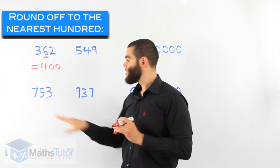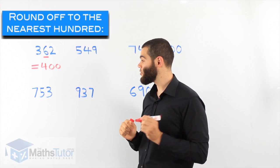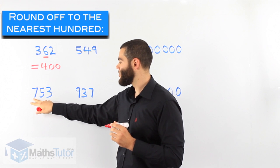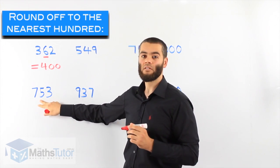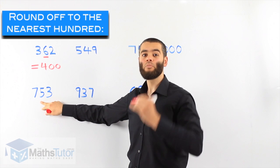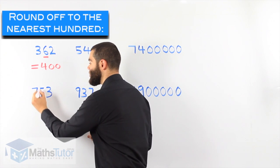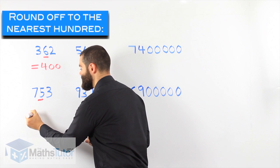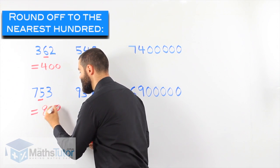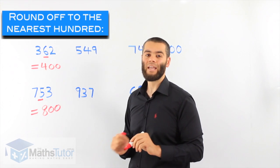Another example: seven hundred and fifty-three. We're asked to round off to the nearest hundred. We look to the number on the right of the hundreds column — that number is a five. The rule is five or more has enough muscles to push us up. So it pushes the hundred up, and therefore seven hundred and fifty-three, rounded up because the five can push it up, becomes eight hundred.